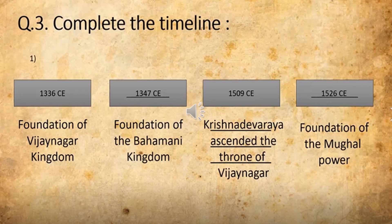Look at the first one. They have given both years. Foundation of Vijayanagara Kingdom is in your workbook, and they have given the year. In the question you can get the year 1336 CE, and then you will be given options: Foundation of Vijayanagara Kingdom, Foundation of the Bahamani Kingdom, Foundation of the Mughal Empire. You are going to click on the right answer: Foundation of Vijayanagara Kingdom.